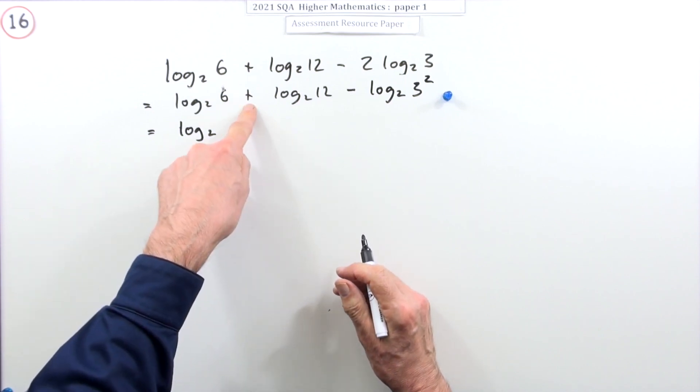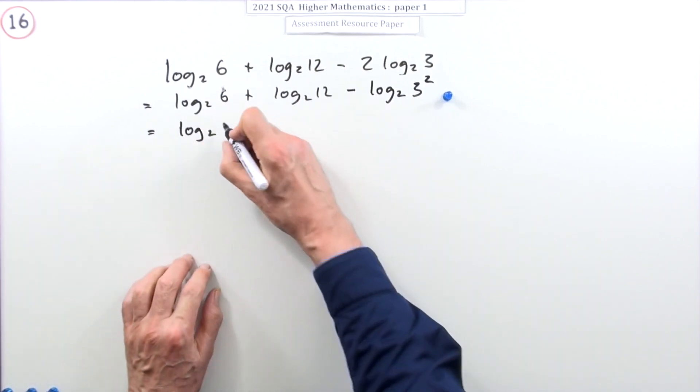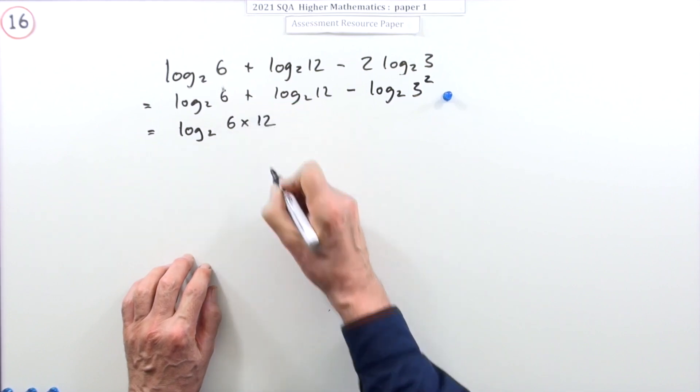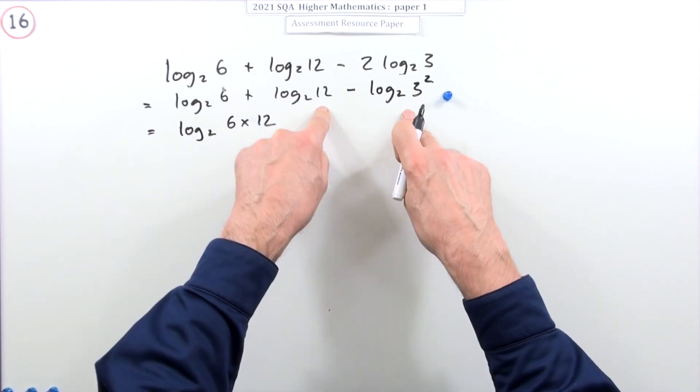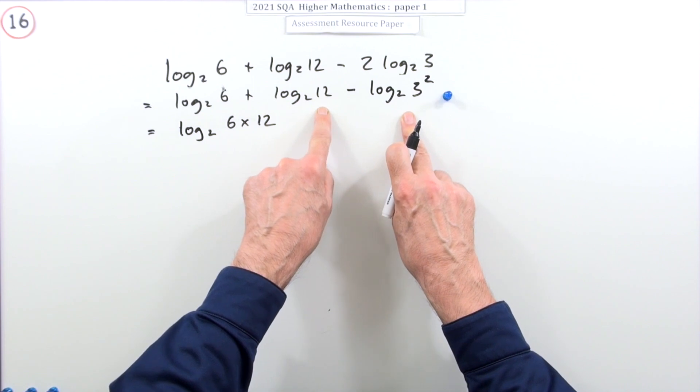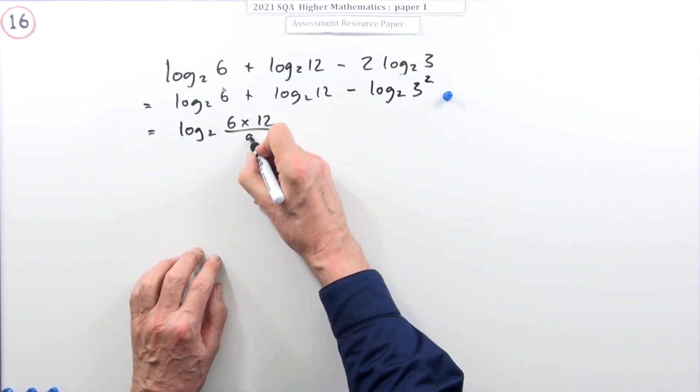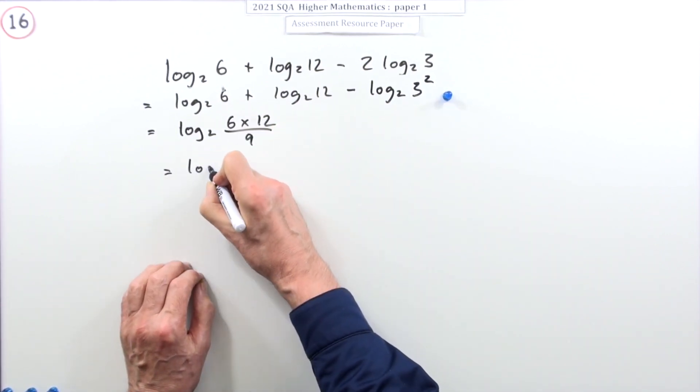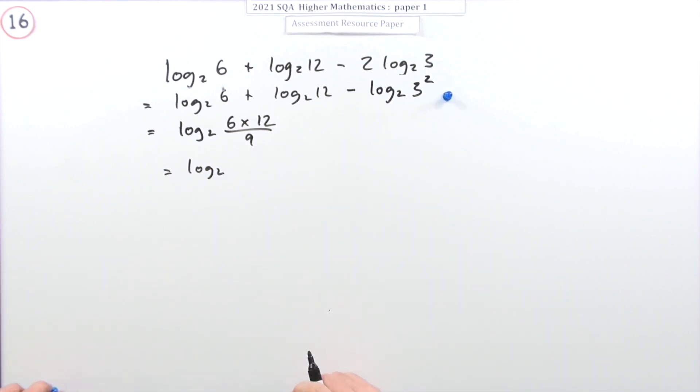The law of logs for adding logs is it becomes the logarithm of the product, so that's 6 times 12. The law of logs for subtracting is it becomes the logarithm of the quotient, so it'll be divided by 9. So there were two marks there.